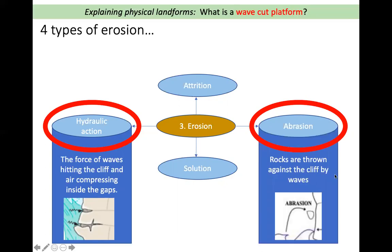Abrasion is where rocks are picked up by the waves and they are thrown against the cliff, causing bits of the cliff to break off. This is like if we threw a tennis ball at the classroom wall — it may cause some of the displays to fall down. So abrasion is the rocks being thrown against the cliff and pieces of the cliff breaking off.